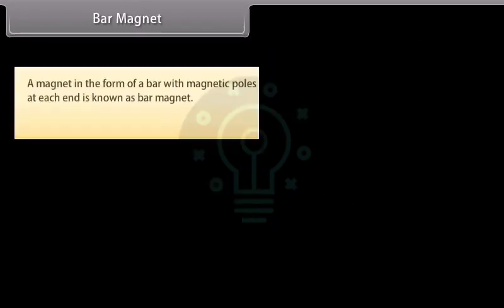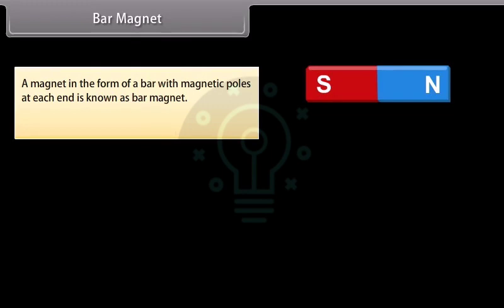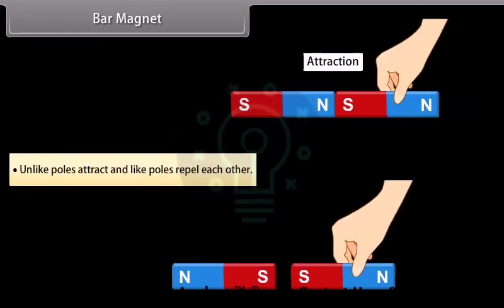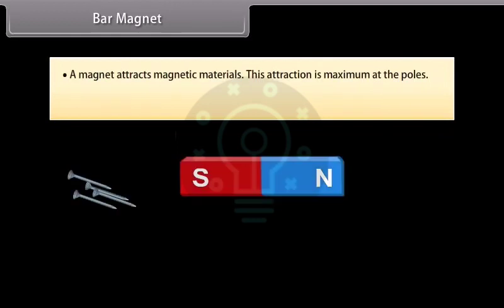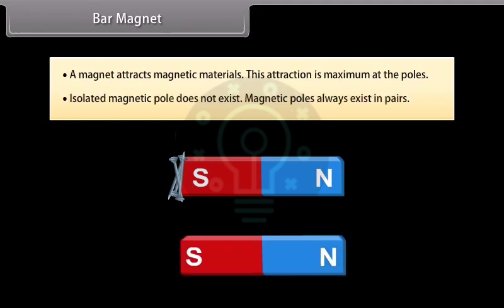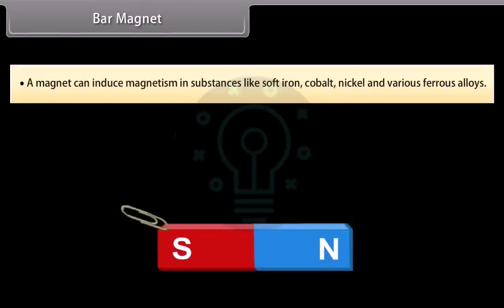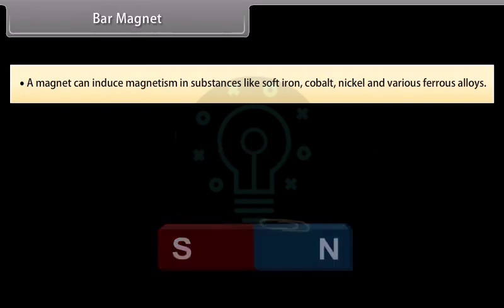Bar magnet: A magnet in the form of a bar with magnetic poles at each end is known as a bar magnet. The main properties of a bar magnet are: when a magnet is suspended freely, it aligns itself with one end pointing towards the north of Earth and the other towards the south. Unlike poles attract and like poles repel each other. A magnet attracts magnetic materials, and this attraction is maximum at the poles. Isolated magnetic poles do not exist; magnetic poles always exist in pairs. A magnet can induce magnetism in substances like soft iron, cobalt, nickel, and various ferrous alloys.